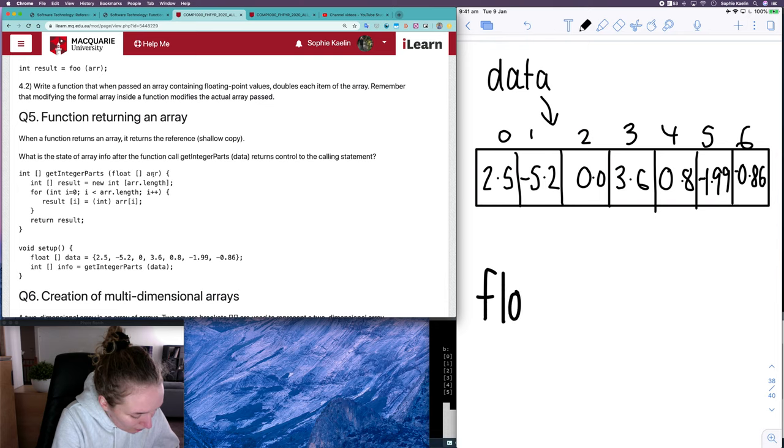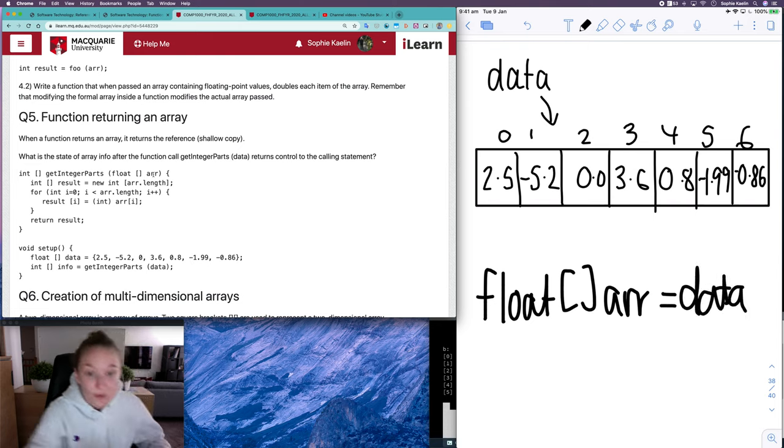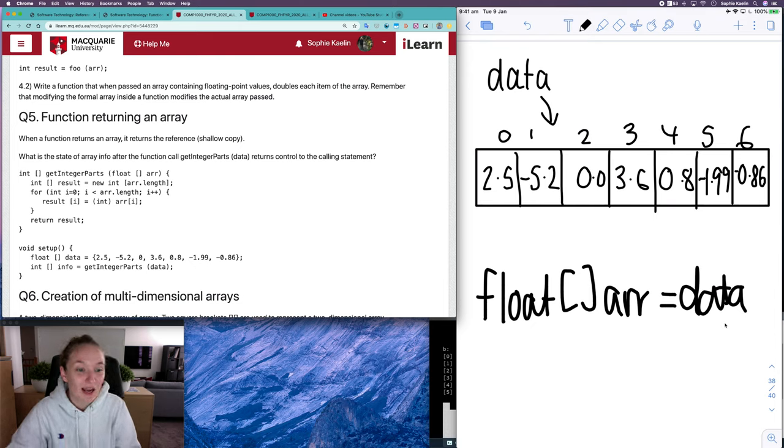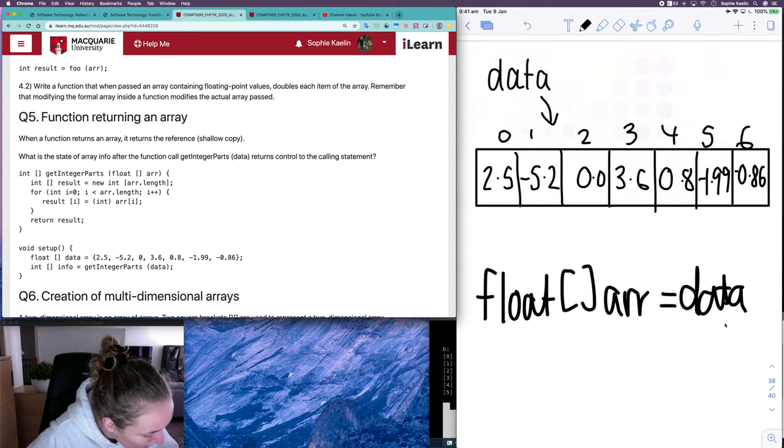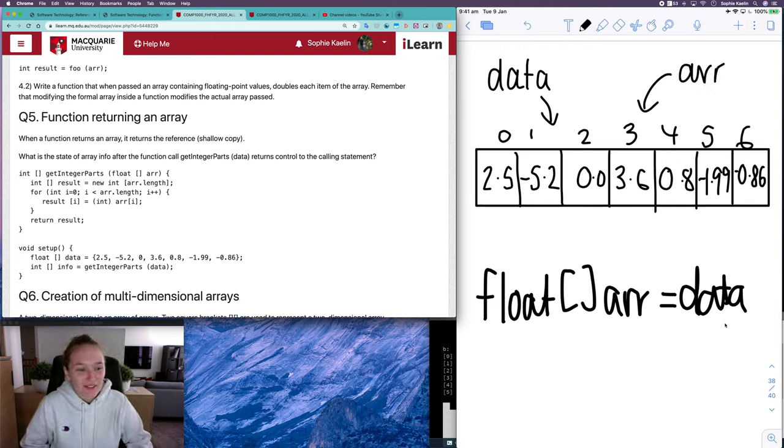So the equivalent of saying float array R is equal to data which we know is a shallow copy. We're saying that the float array R is a reference to a place in memory and data is also a reference to a place in memory that's just a reference there it's not the actual array. So what's happening here is we now have two references to the same place in memory. R is another reference to that array.